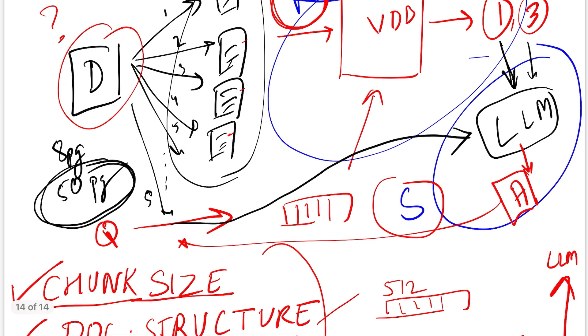And then the obvious stuff: what embeddings do we choose? Are embeddings really representative of our domain or not? Do we need to fine-tune them and so on and so forth? These are a few things that also you have to consider when building the retrieval part of the RAG system.